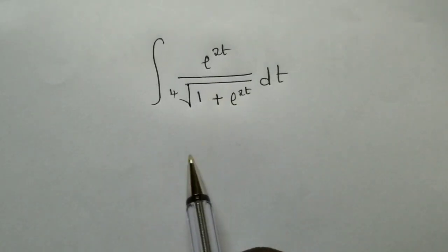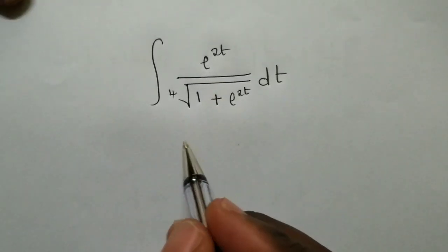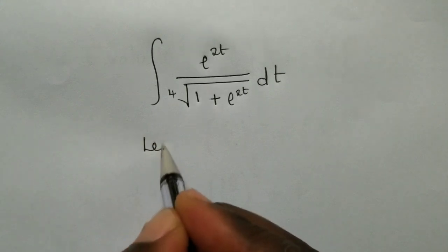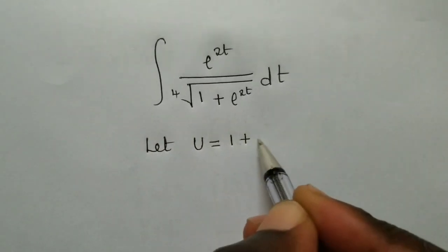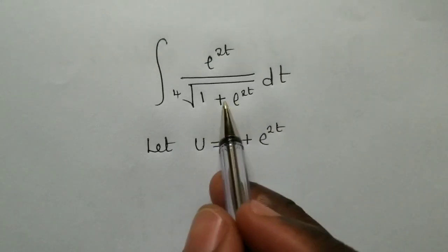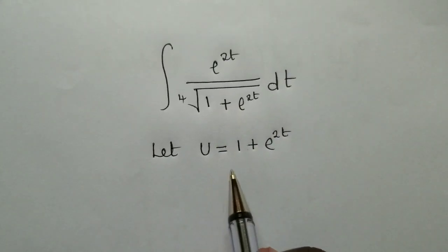To find the integral of this question here, we are going to let u be equal to 1 plus e power 2t. So what is inside here?